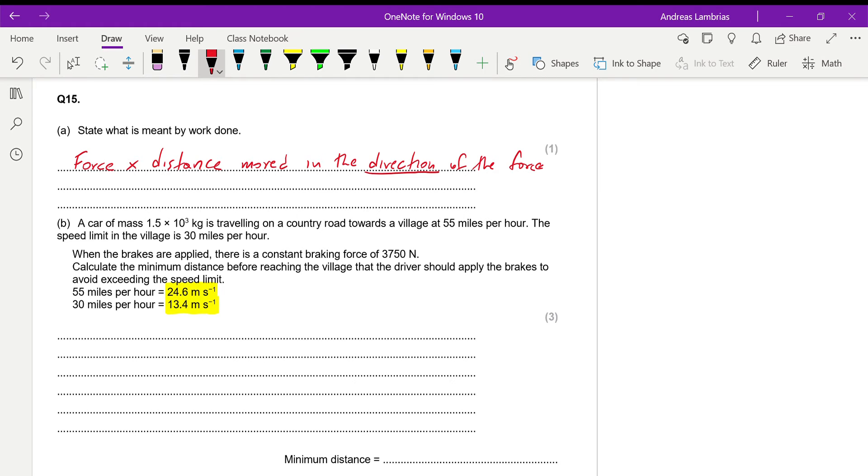Then we need to calculate the kinetic energy before the driver applies the brake. So before braking, the kinetic energy is, of course, half times mass times the velocity squared. If I substitute the numbers, that will be 1.5 times 10 to the power of 3 kilograms, which is the mass, times the velocity, which is 24.6 meters per second squared. So if I do these calculations, this will give me 4.54 times 10 to the power of 5 joules. This is the kinetic energy before the application of the brakes.